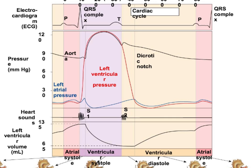Once you open the aortic valve, the ventricular pressure stays high along with the aortic pressure to create the driving force. It pushes blood into the aorta far enough so it doesn't rebound back into the ventricles. You drive the blood into the aorta, and then at this point you get aortic valve closure.